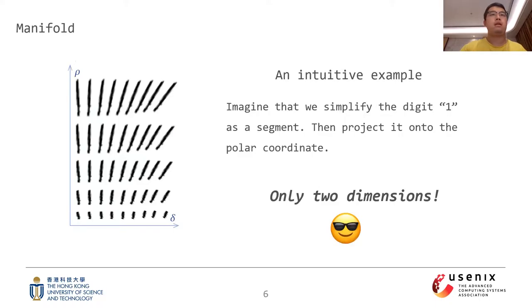To better understand the perceptual constraints, here I show an intuitive example. Let's imagine that we simplify the digit 1 as a segment and project it onto the polar coordinate. To represent a segment in the polar coordinate, we only need two dimensions: the length rho and the rotation angle delta. In that sense, if we want to reconstruct a simplified digit 1, we no longer need to recover all 900 pixel values. Instead, we only need to recover its length and rotation angle.